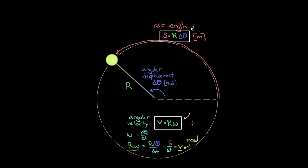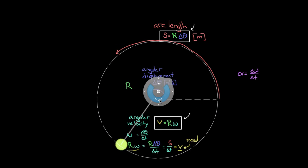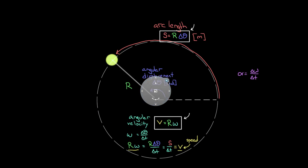Angular acceleration, represented by alpha (α), is the change in angular velocity per time. If omega is constant, there's no angular acceleration. If omega is increasing, there is angular acceleration — and in that case the ball will also have regular acceleration, since it's changing its velocity. So how do we relate α to regular acceleration? We use the same approach: multiply both sides by r.